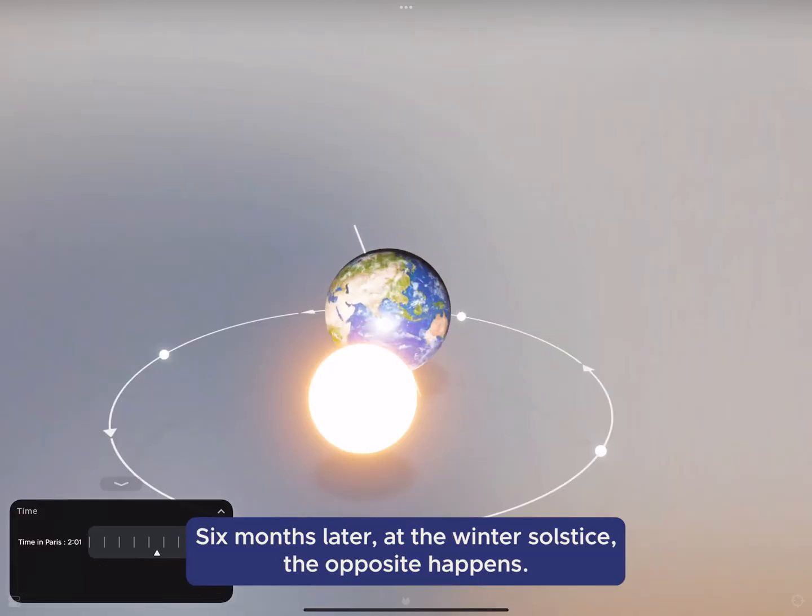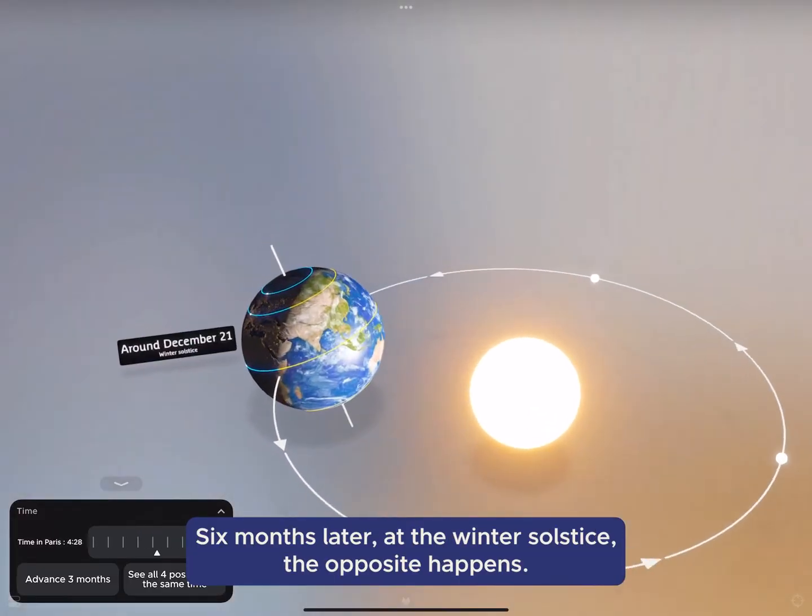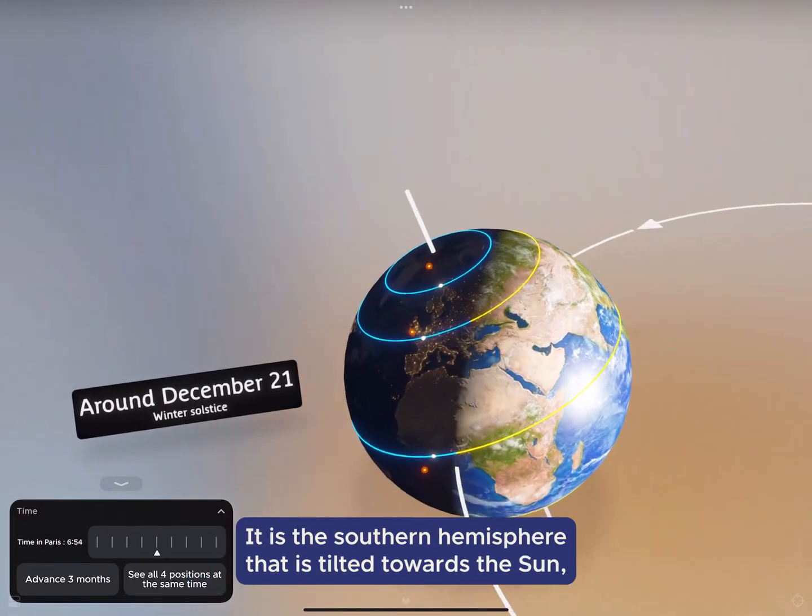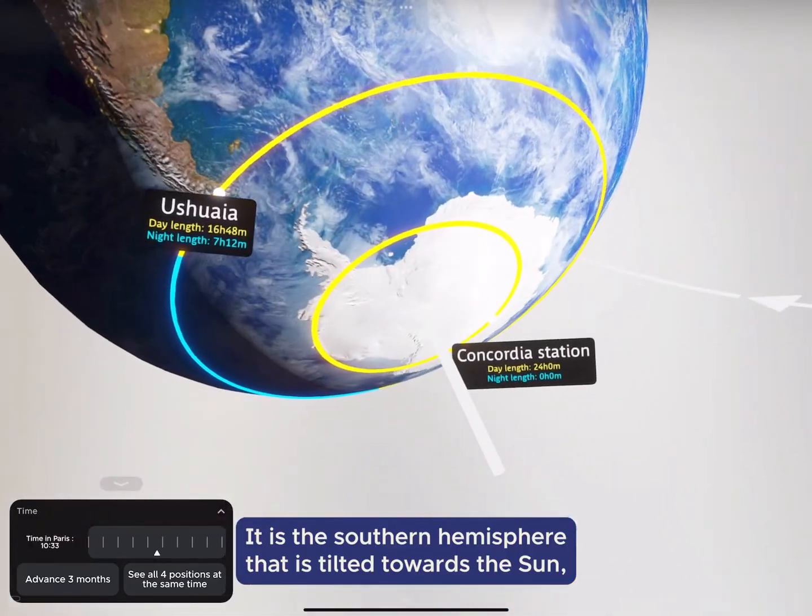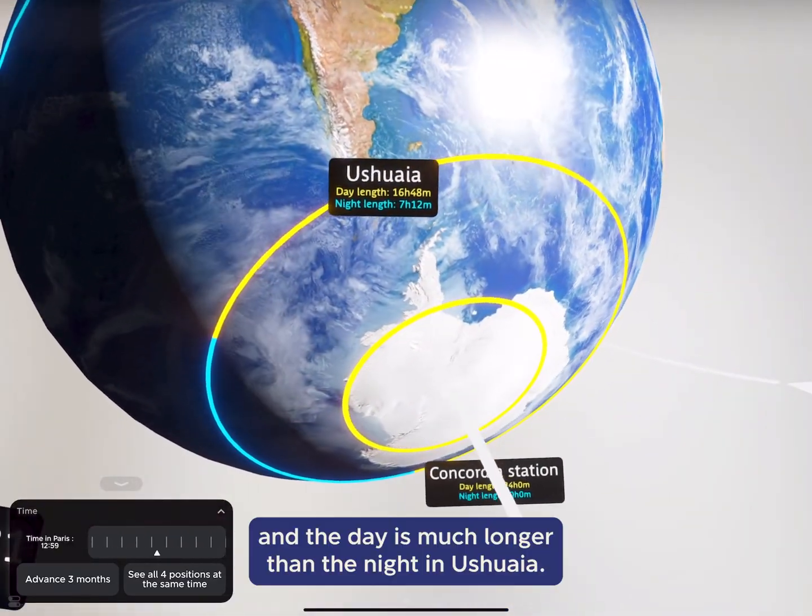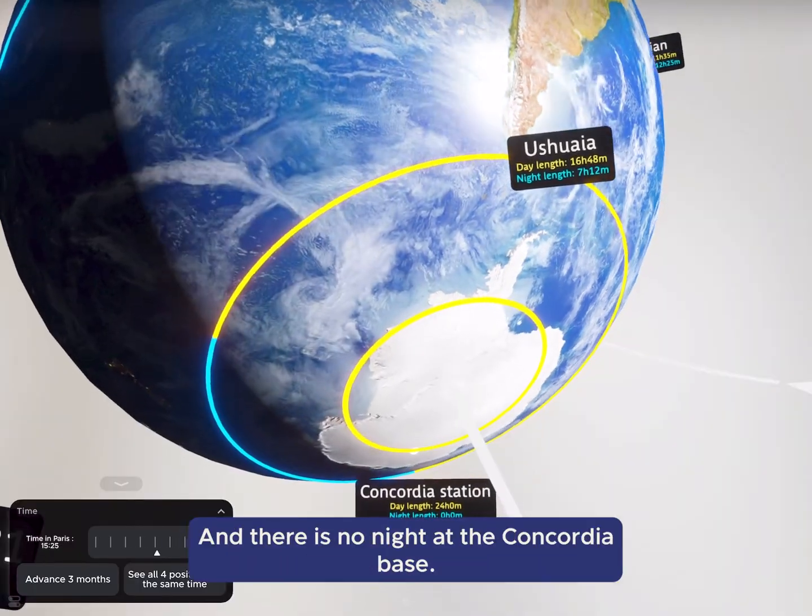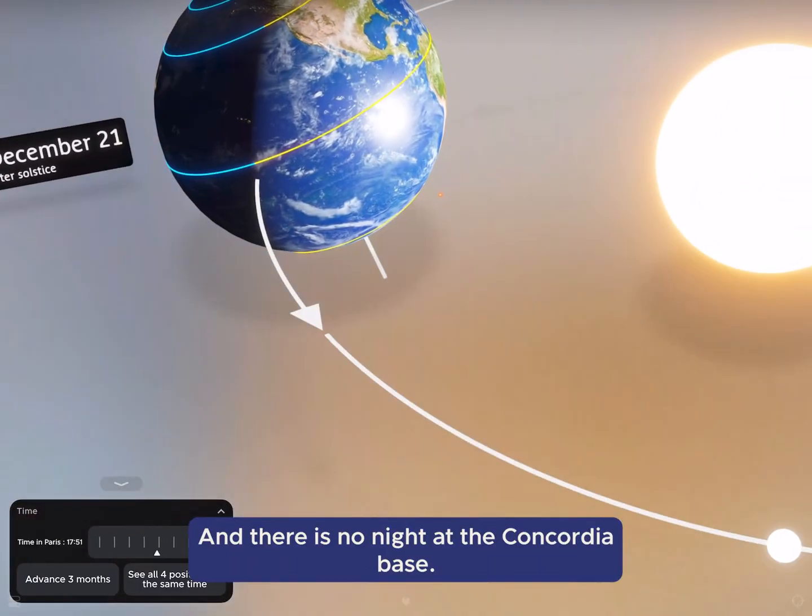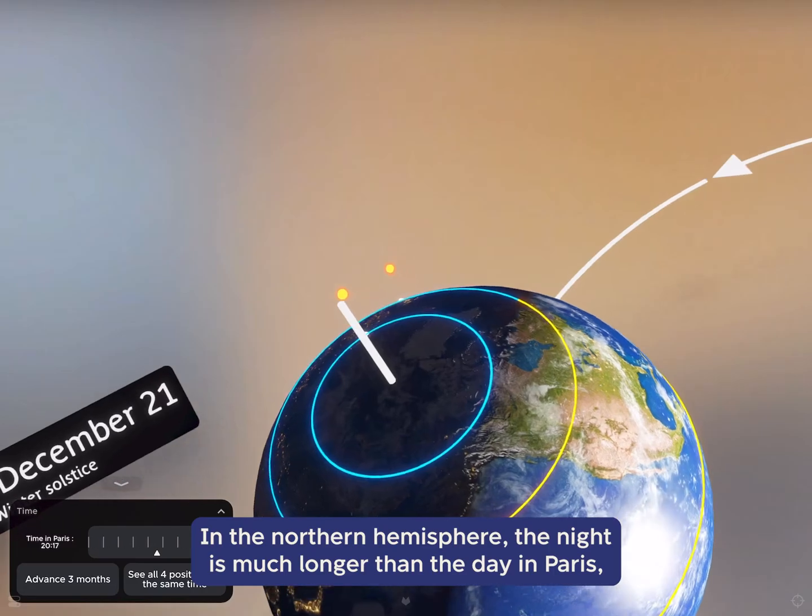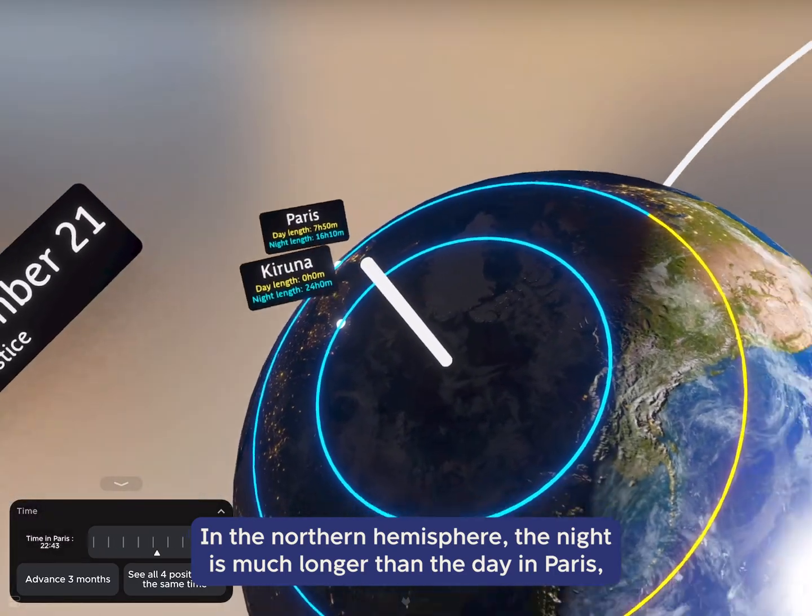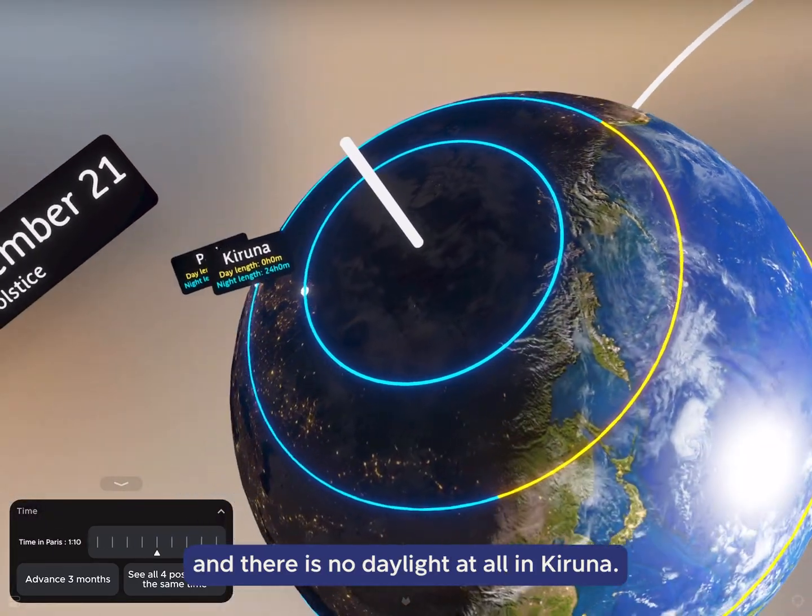Six months later, at the winter solstice, the opposite happens. It is the southern hemisphere that is tilted towards the Sun. And the day is much longer than the night in Ushuaia. And there is no night at the Concordia base. In the northern hemisphere, the night is much longer than the day in Paris. And there is no daylight at all in Kiruna.